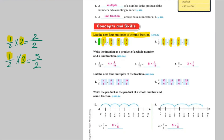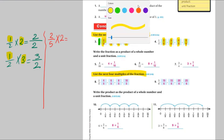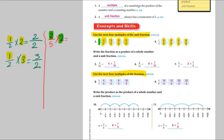To get multiples of any number or fraction, write the multiplication table of that fraction. For the next problem, the fraction given is 2 over 5. Multiply by 2: 2×2=4, so 4 over 5. Multiply by 3: 2×3=6, so 6 over 5. Then 8 over 5 and 10 over 5.